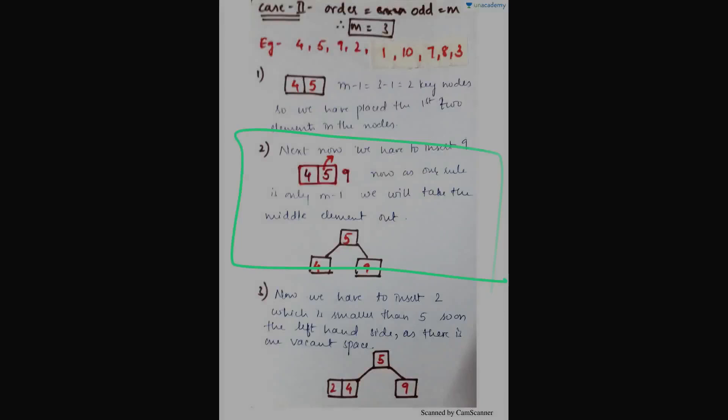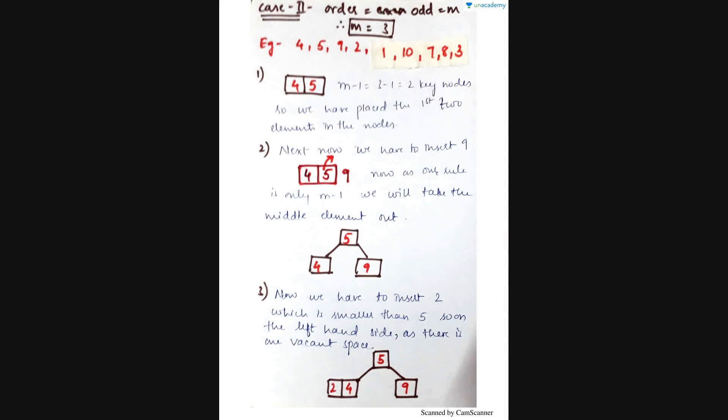Now let's move to case 2, which has order odd. Here I have taken m equal to 3. According to the rule, m-1 equals the number of keys, so 3-1 equals 2 keys. We have to insert the first 2 elements in ascending order. The example is 4, 5, 9, 2, 1, 10, 7, 8, 3. Since 4 and 5 are already in ascending format, I will directly place them as 4 and 5.